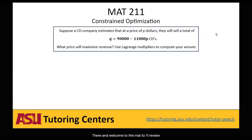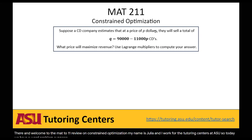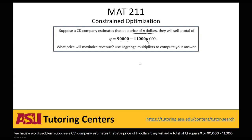Hi there and welcome to the MAT 211 review on constrained optimization. My name is Julia and I work for the tutoring centers at ASU. Today we have a word problem: suppose a CD company estimates that at a price of P dollars they will sell a total of Q equals 90,000 minus 11,000 times P CDs. What price will maximize our revenue? We're going to use the Lagrange multiplier method to compute our answer.